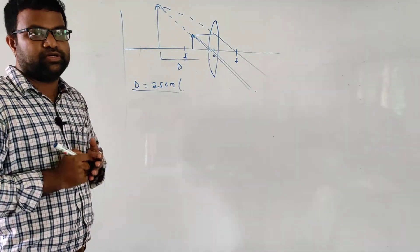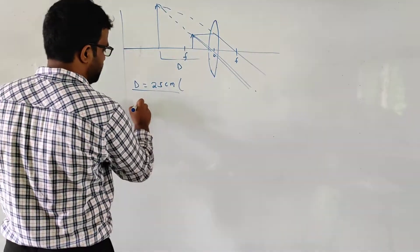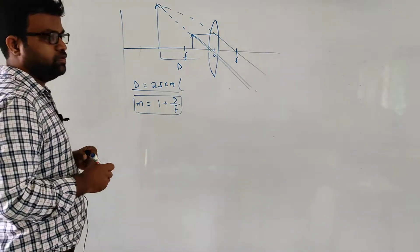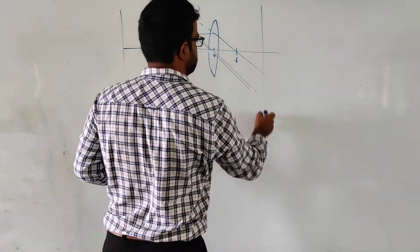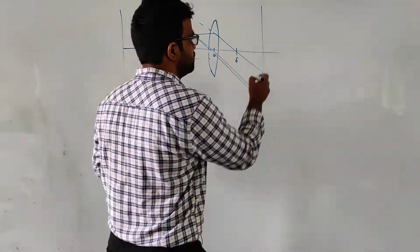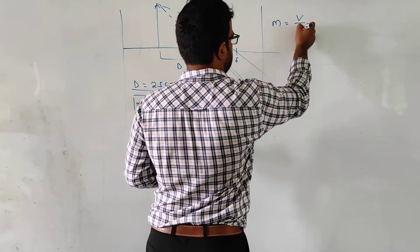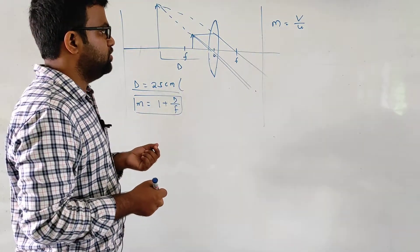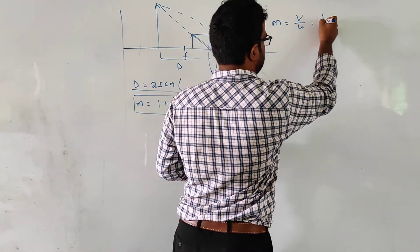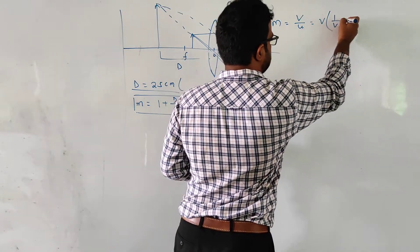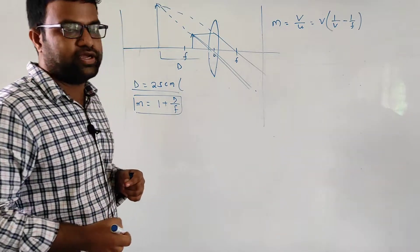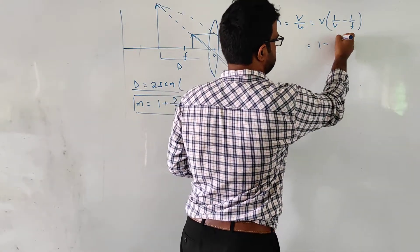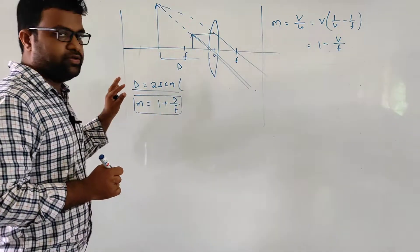The magnification will come out as 1 plus D by f. Here is how we get this expression: magnification m equals v upon u. Now, from the lens formula, one by u equals one by v minus one by f. So m equals v into (one by v minus one by f), which gives one minus v by f.